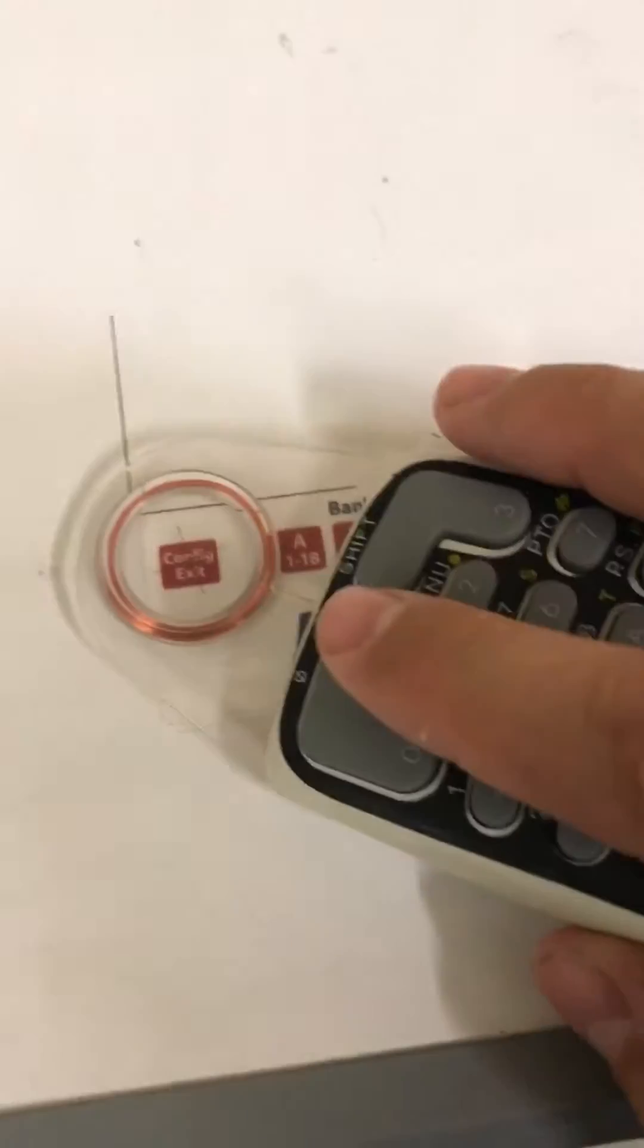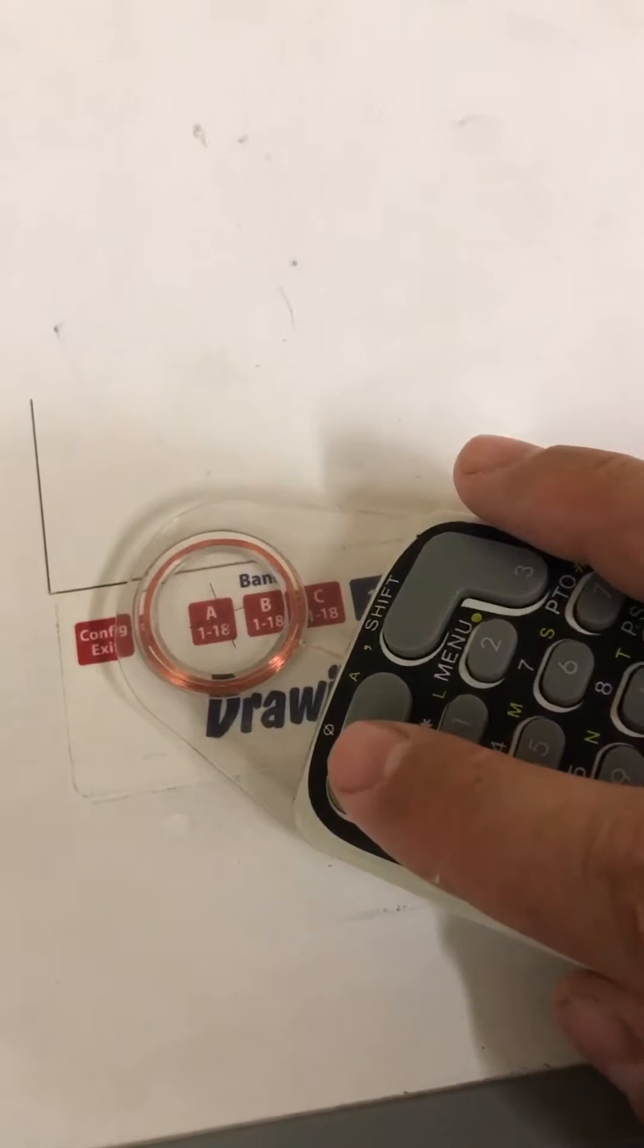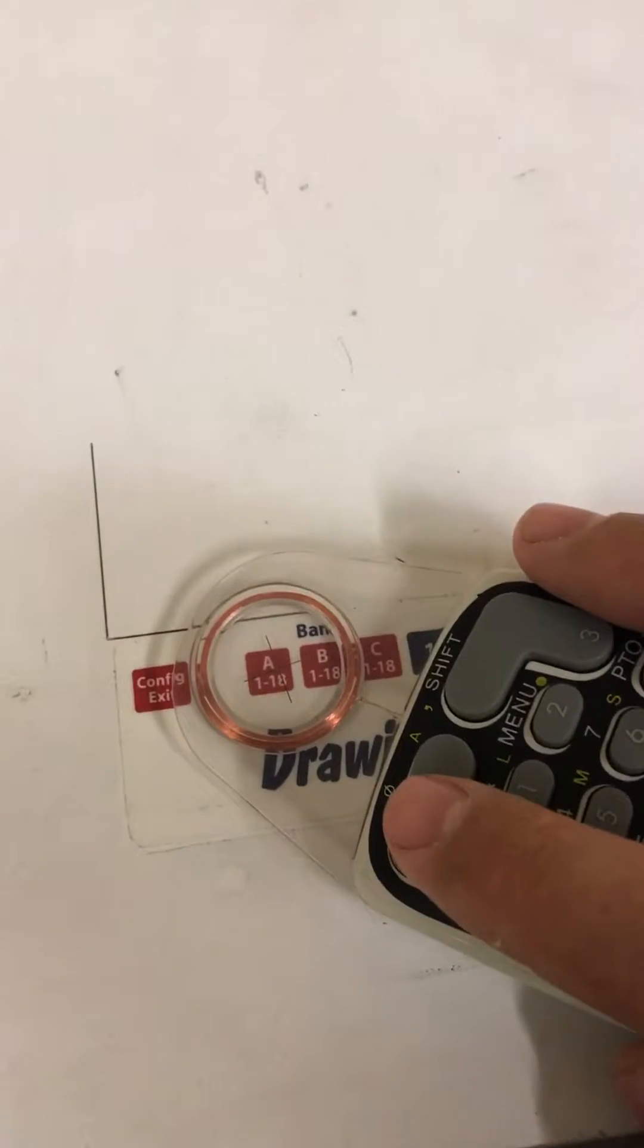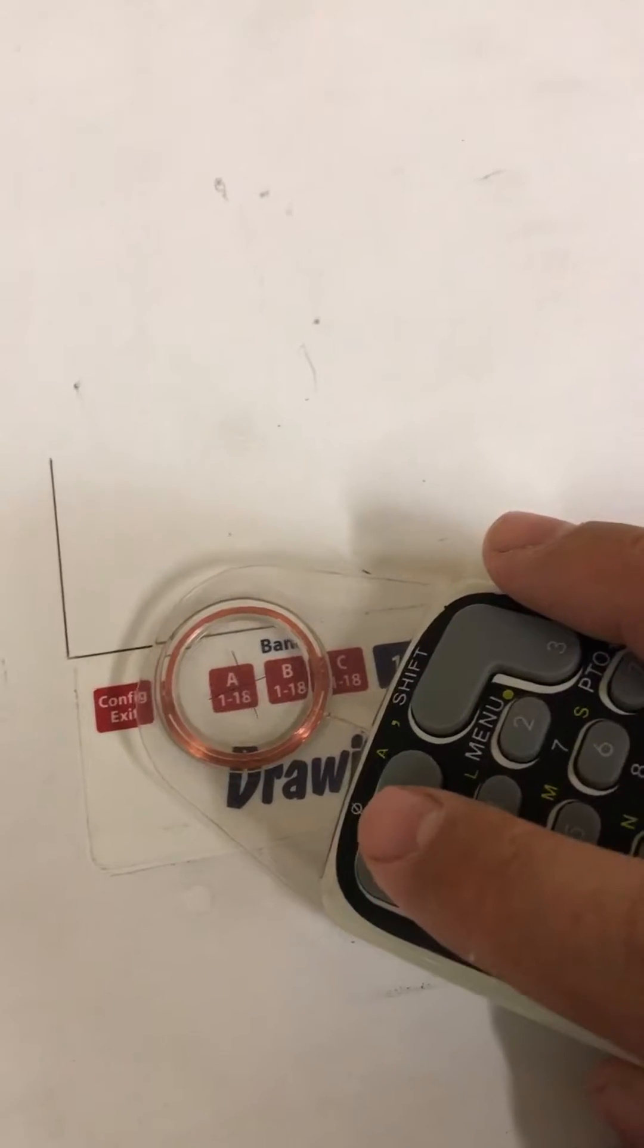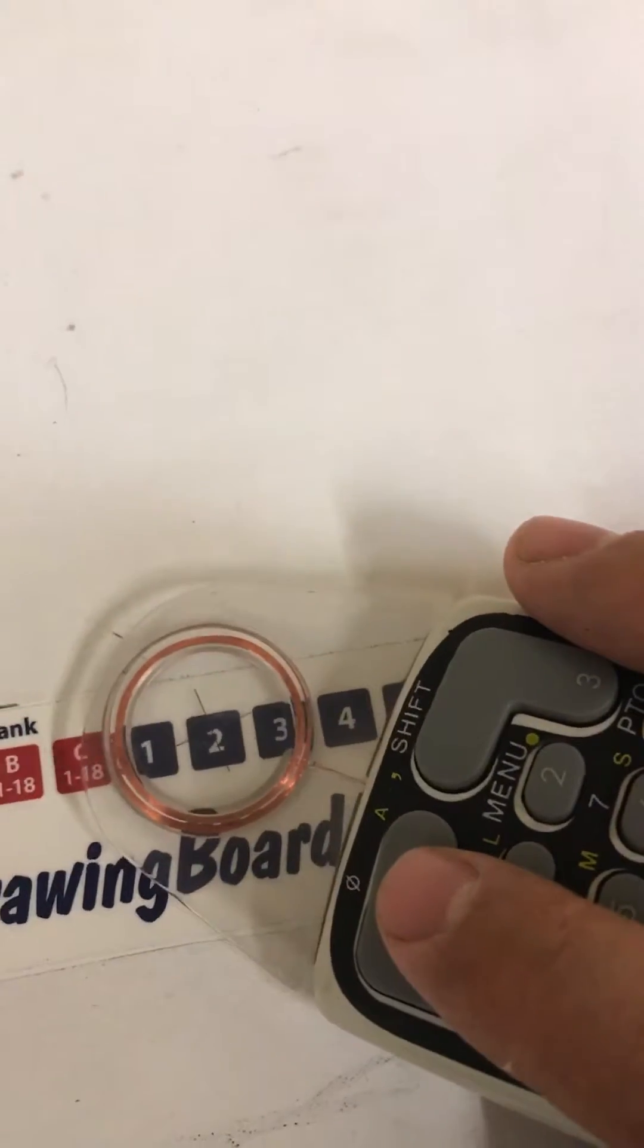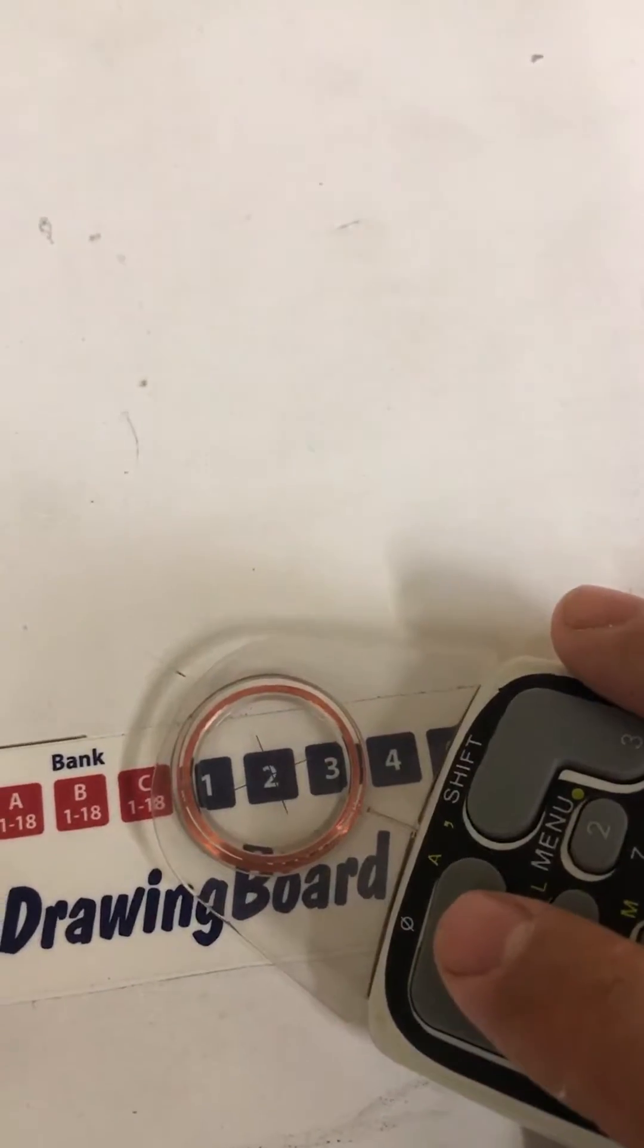Then you move over to one. It should be off. Scoot over to two. You're not clicking on these, you're just hovering over them.